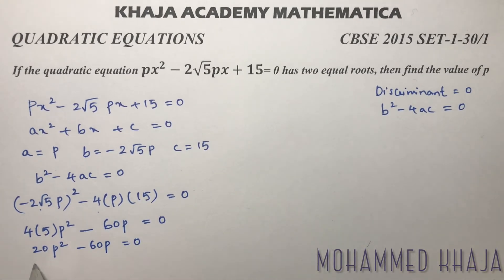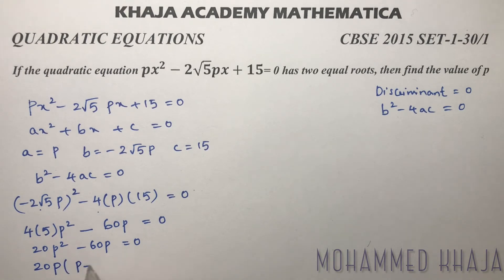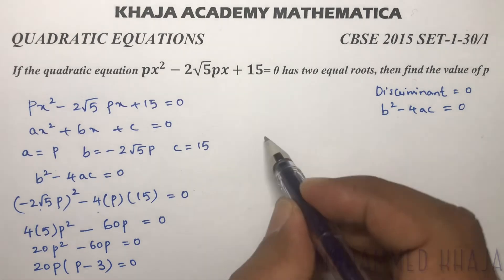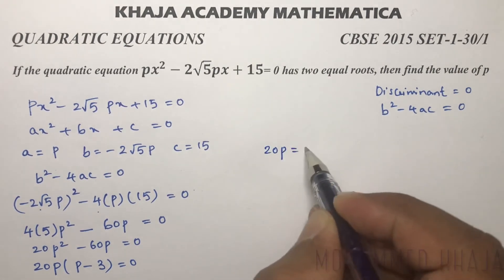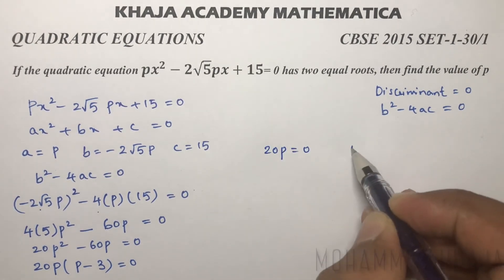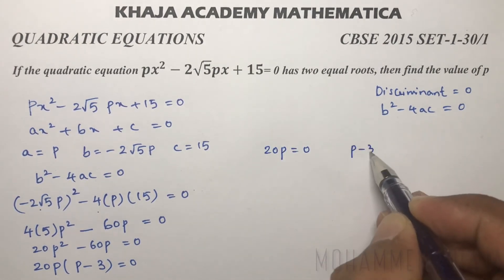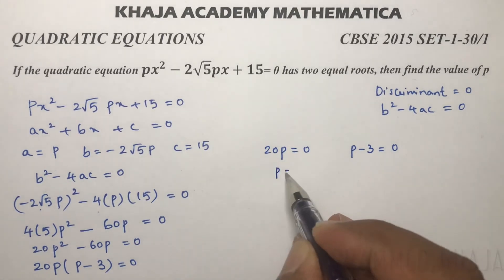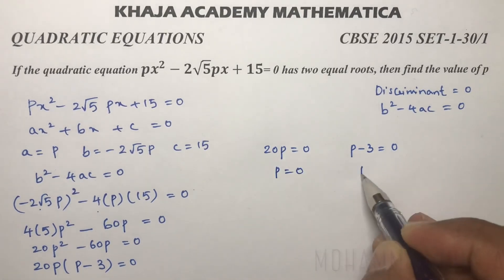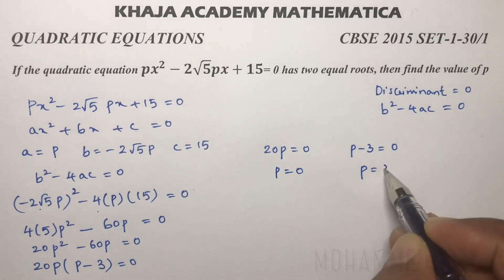Taking out the common factor 20p: 20p times (p minus 3) equals 0. So either 20p equals 0, giving p equals 0, or p minus 3 equals 0, giving p equals 3.